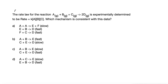So here we have a kinetics problem that says the rate law for the reaction A plus B plus C produces 2D is experimentally determined to be rate equals K times concentration of A times concentration of B times concentration of C. And the question is which mechanism is consistent with this data?